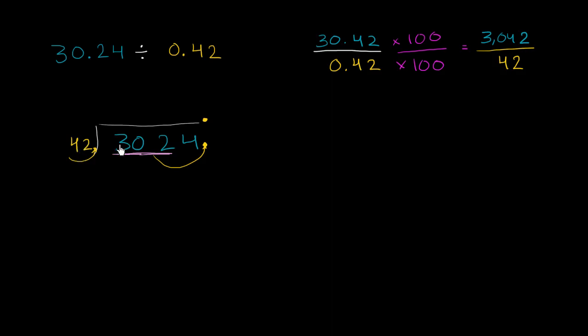So let's think about it a little bit. So this is roughly 40. This is roughly 300. So how many times does 40 go into 300? Well, how many times does 4 go into 30? Well, it looks like it's about seven times. So I'm going to try out a 7, see if it works out. 7 times 2 is 14. 7 times 4 is 28. Plus 1 is 29.